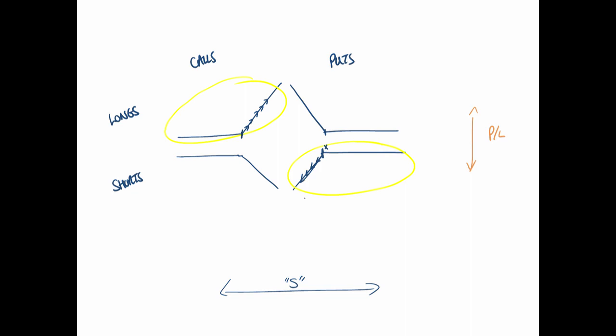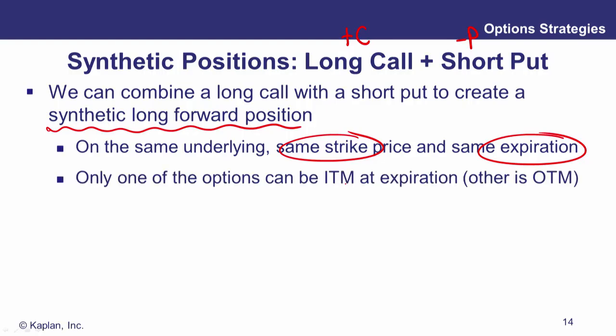That's what's happening when you're going plus C minus P. So if they've got the same strike, these two options, we can only be above the strike or below the strike. If we're above the strike, the call is paying out. If we're below the strike, the put that you sold is paying out, so you're losing.